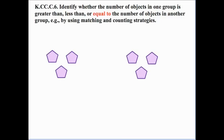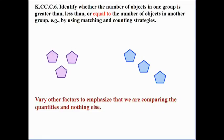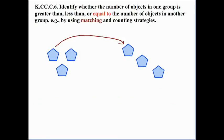Let's start with an example where we have two quantities — two sets — and they happen to be equal. One thing we need to do is change the spatial orientation of the objects to focus on the idea that we're comparing the quantities and nothing else. We might rearrange them, or change the color of the items, to again emphasize that it's only the quantities being compared.